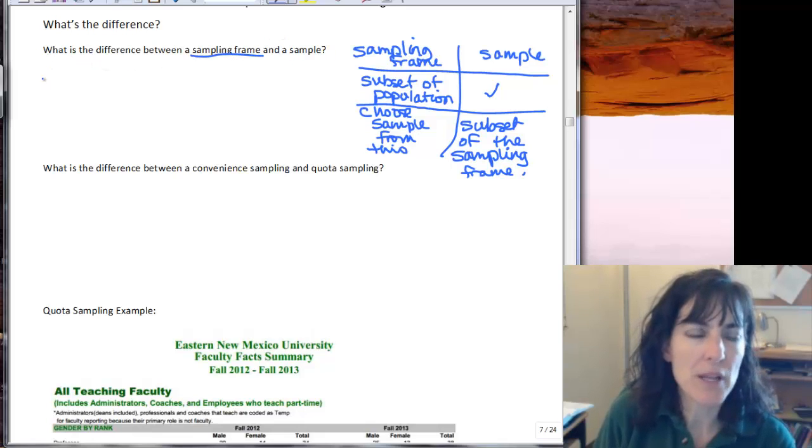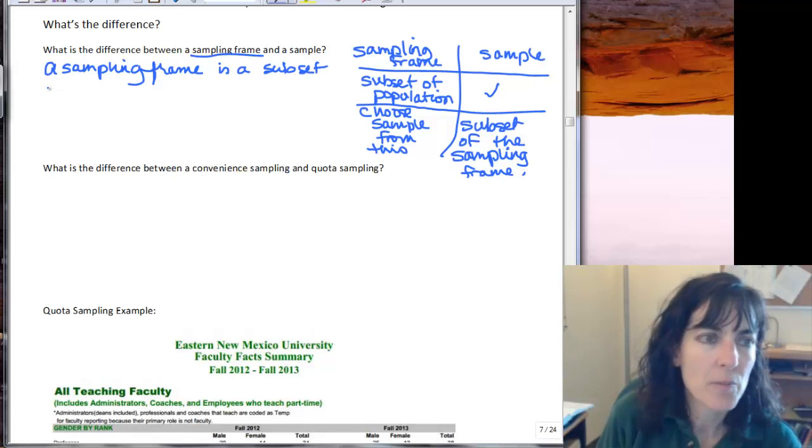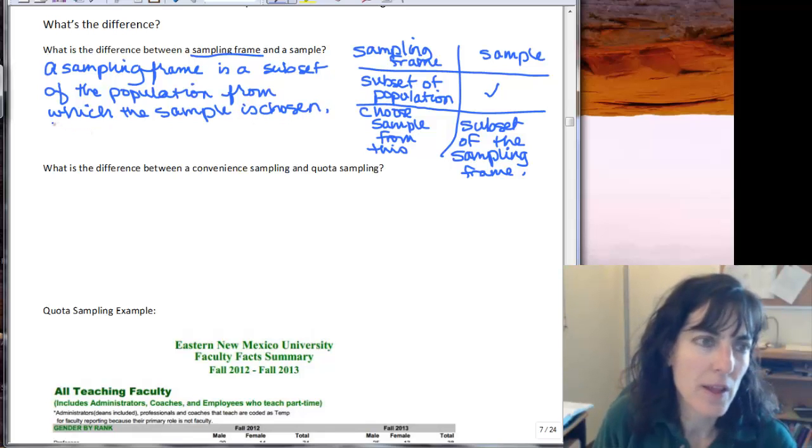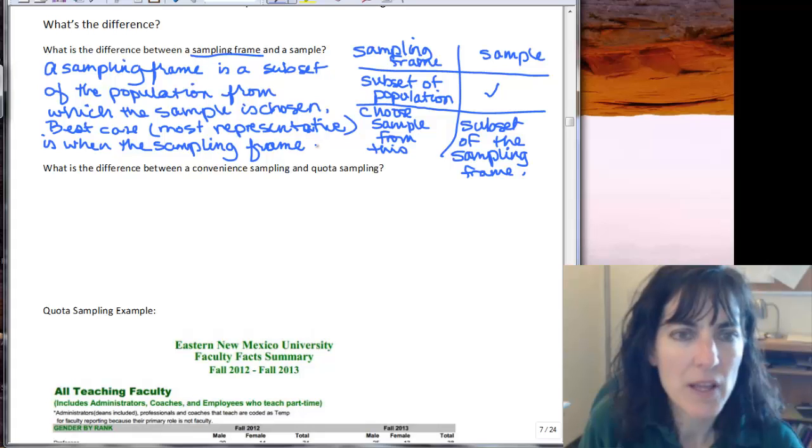So the difference between a sampling frame and a sample: we would say a sampling frame is a subset of the population from which the sample is chosen. The best case, most representative, is when the sampling frame equals the population.